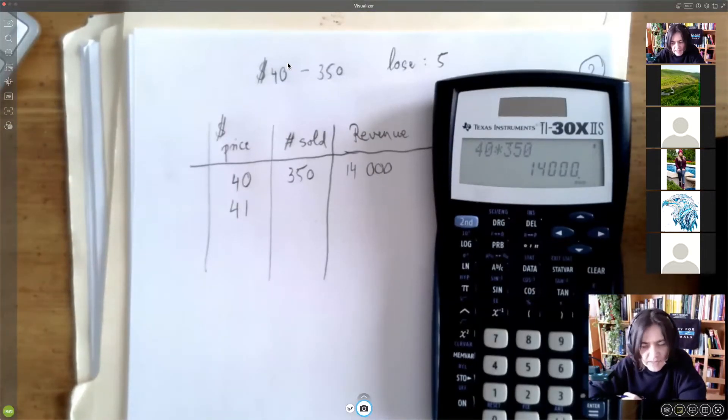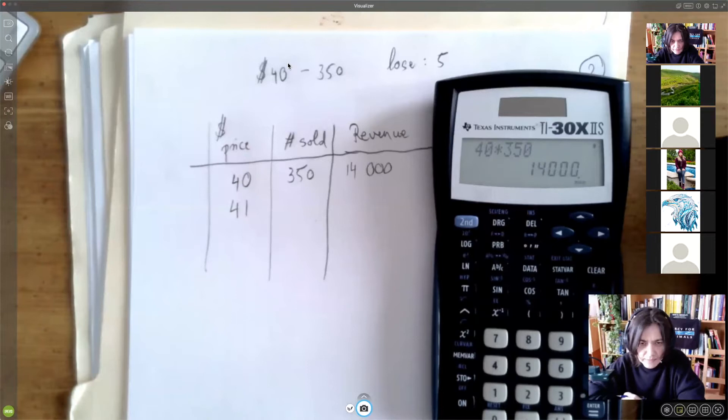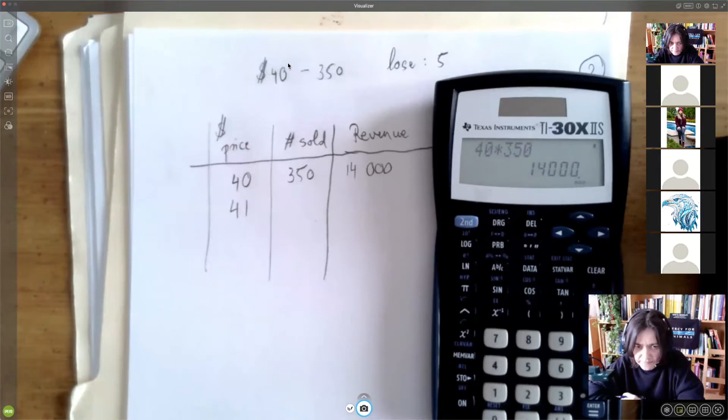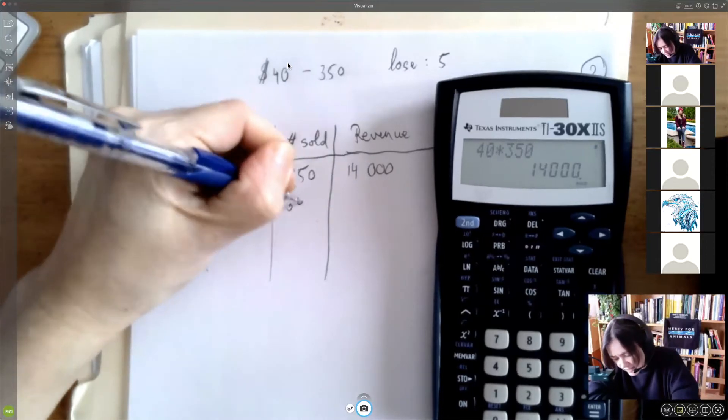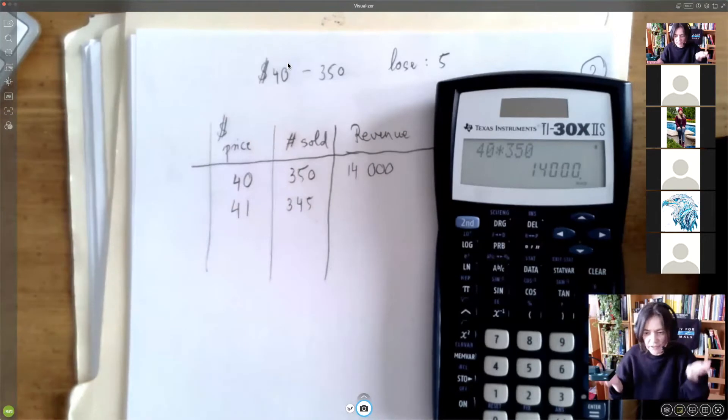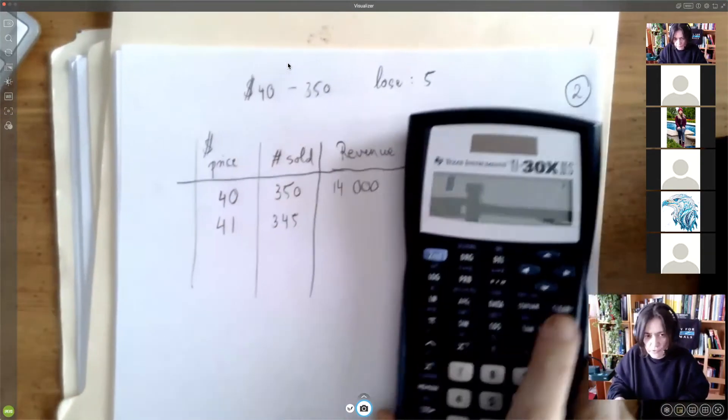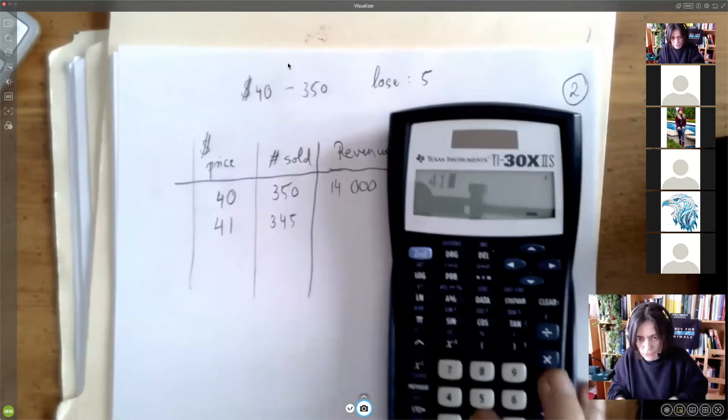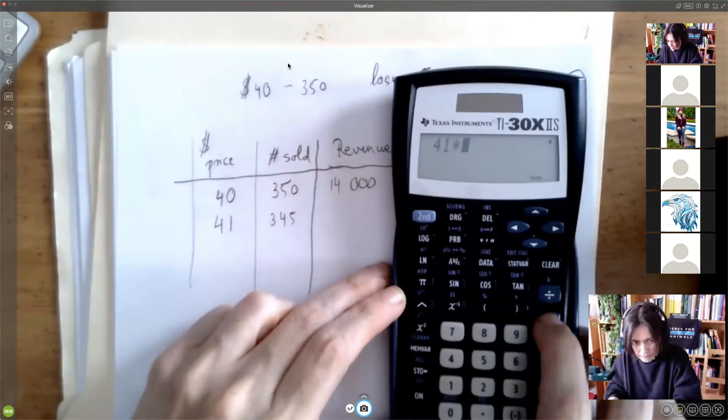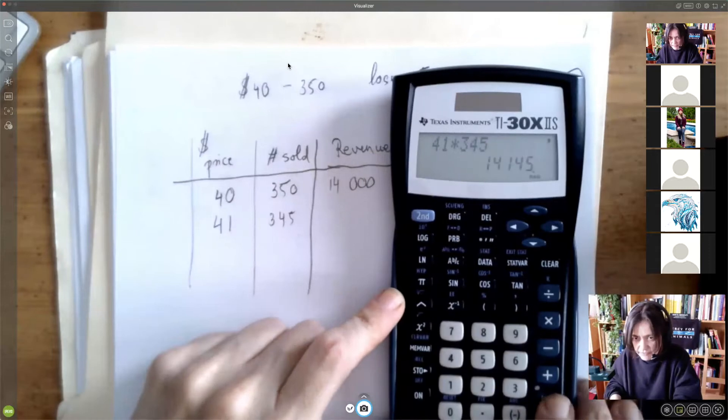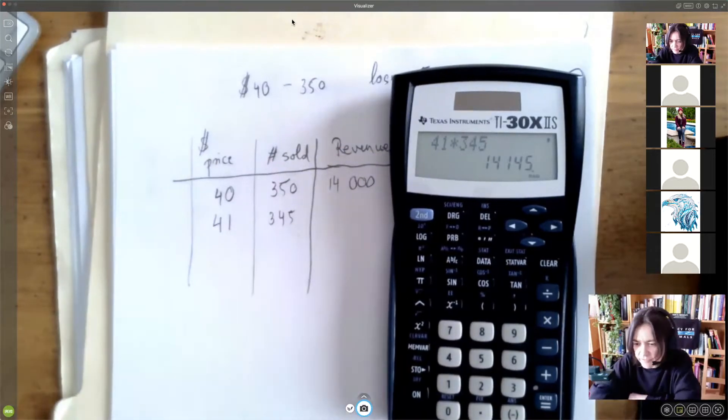What happens if we raise the price by $1? How many tickets can we sell then? 345. Exactly. We lose five tickets. And so it's a balancing act. It's more money, but from fewer hands. And so should we raise the price? 41 times 345. I see 145 reasons to raise the price, right?